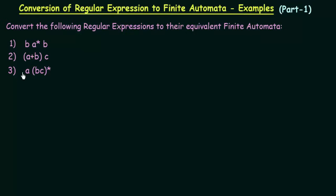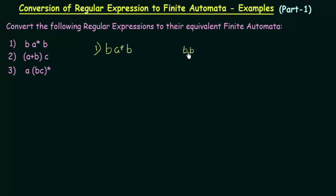We have three expressions and we will start with the first one: B A star B. This means the strings accepted by this regular expression are strings like BB — that is, B followed by zero or more A's (A closure), then followed by a B again. So it could be BB, BAB, BAAB, and so on. We need to design the finite automata for this.